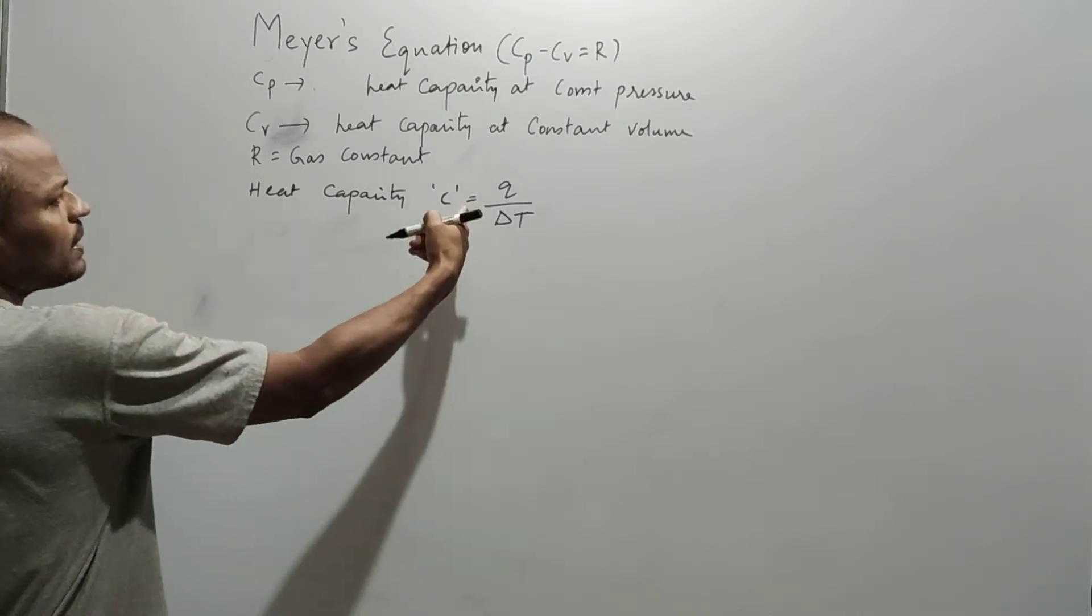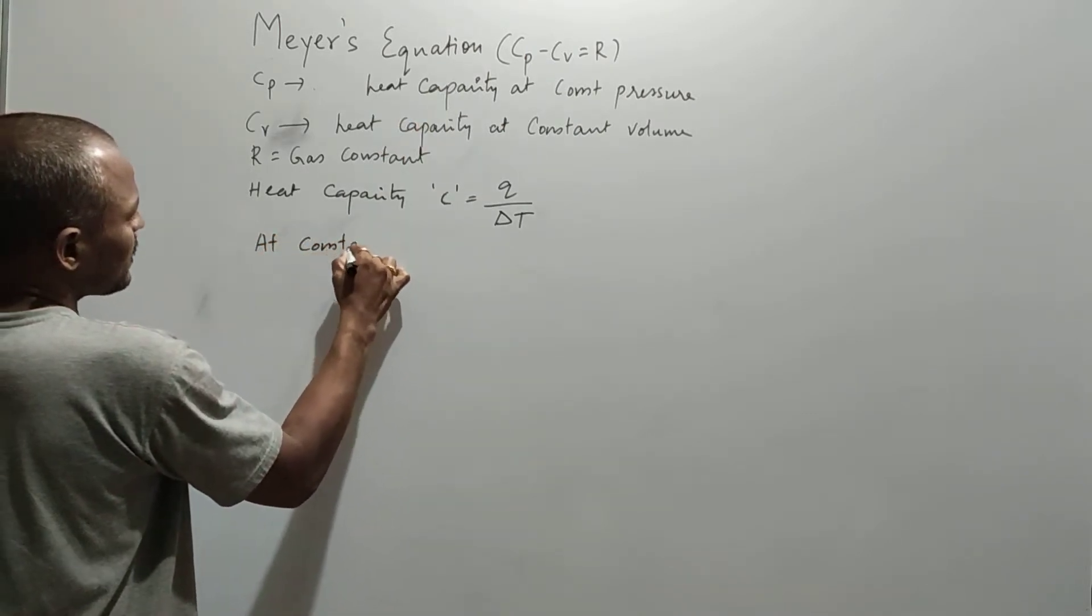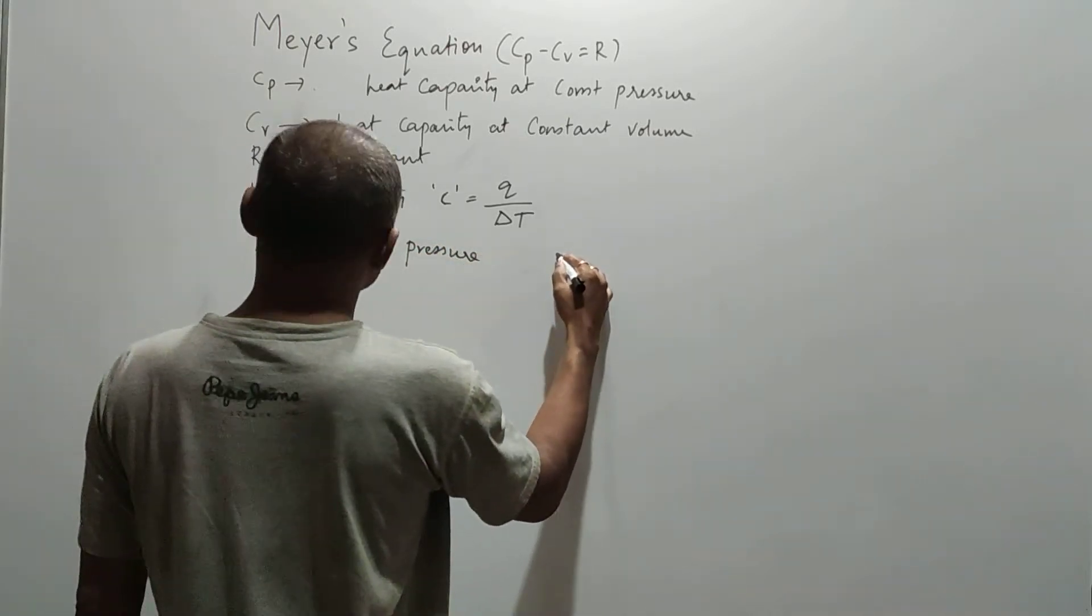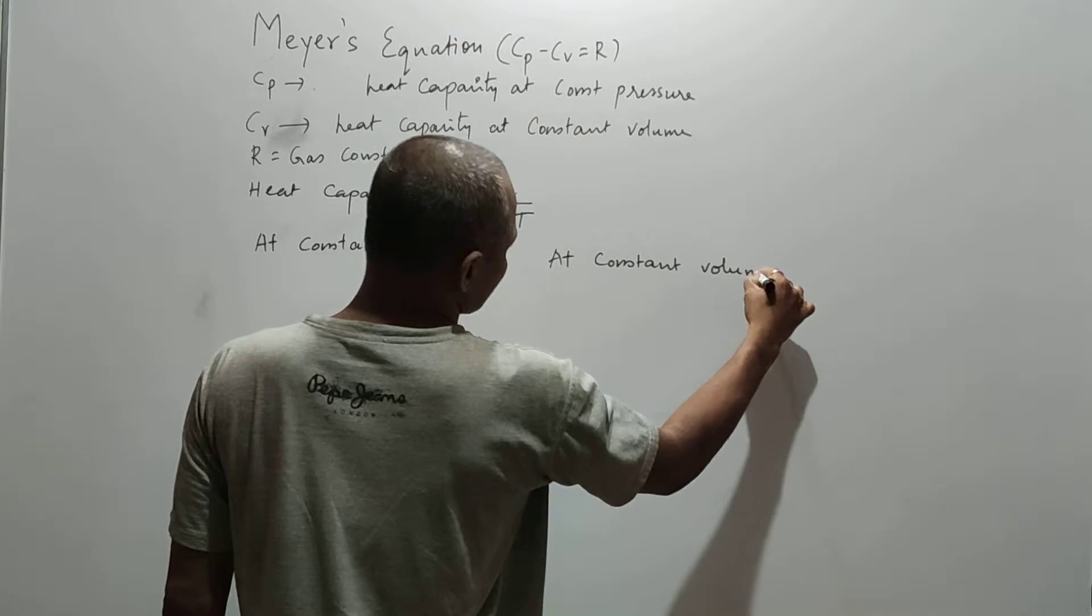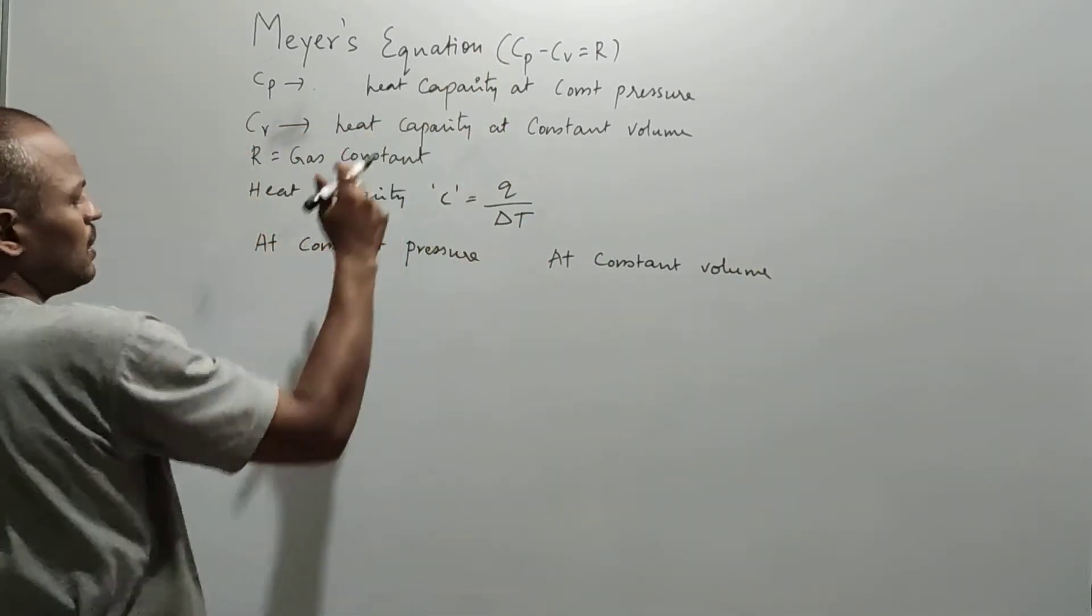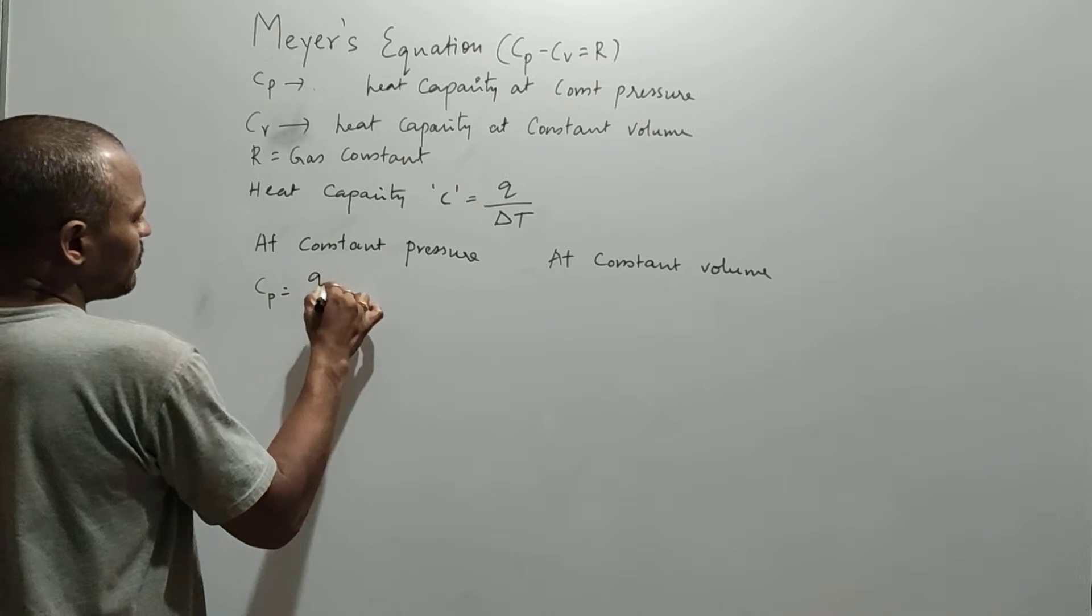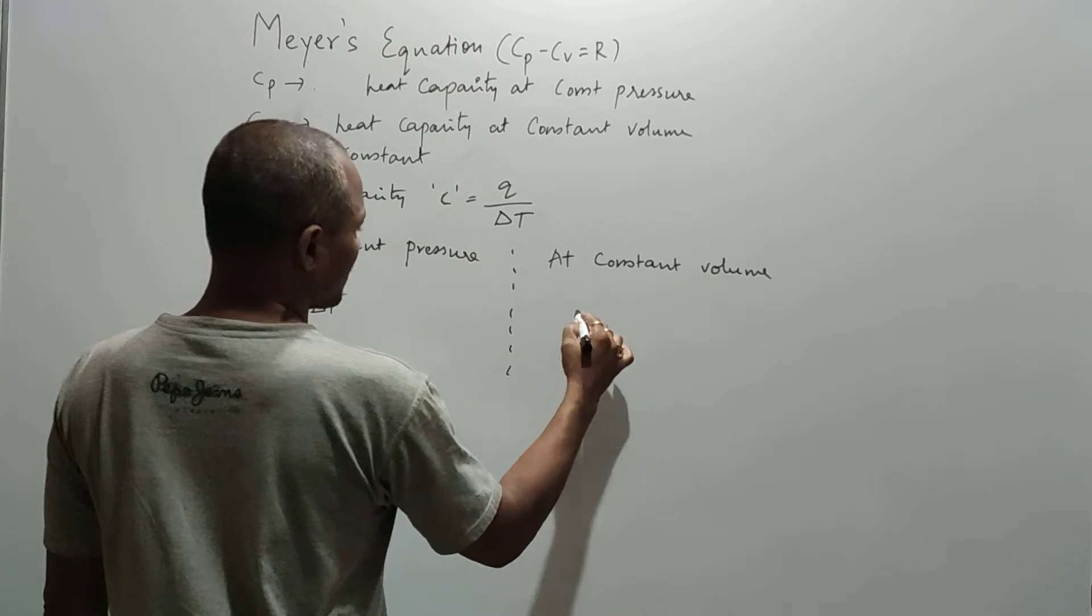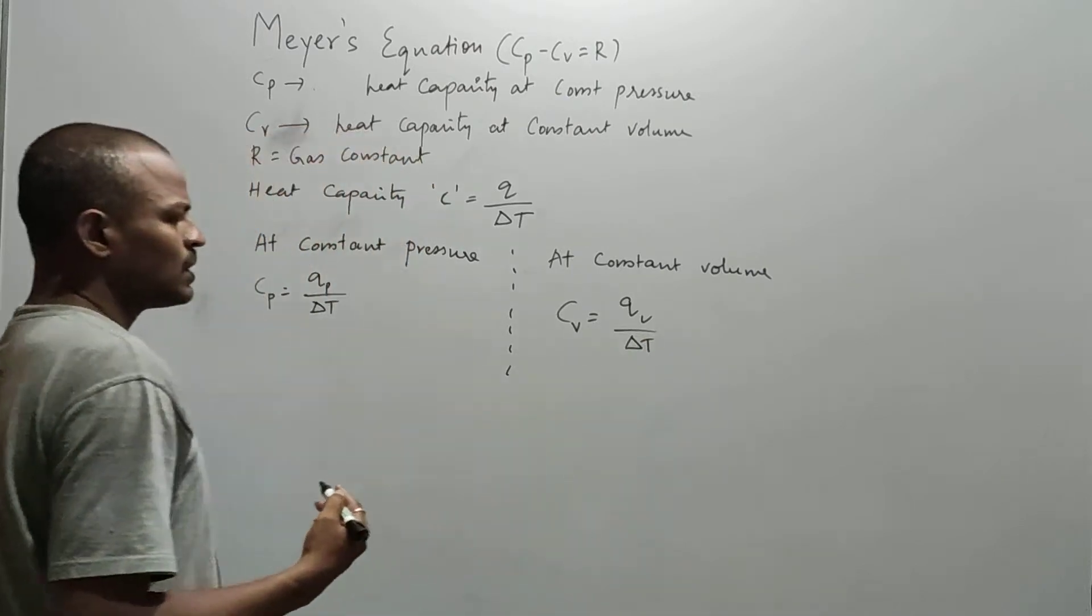Here when we apply the same to at constant pressure and at constant volume, if we apply the same heat capacity formula to the constant pressure, then the formula will become Cp equals Qp by del T.